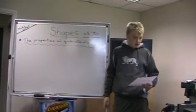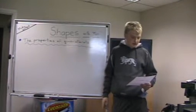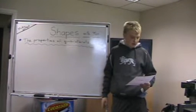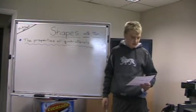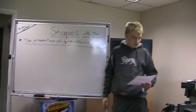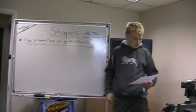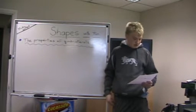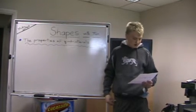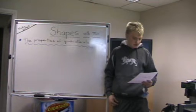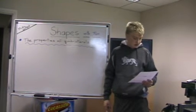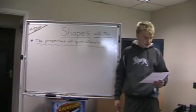Time to review what we have revised — see if you can remember the properties. A square has got four sides of equal length and four right angles. Right angle equals 90 degrees.